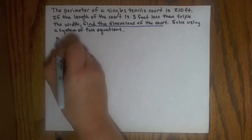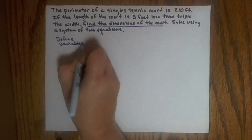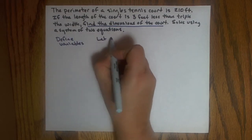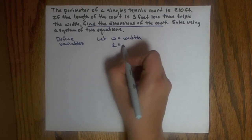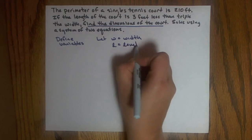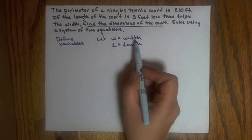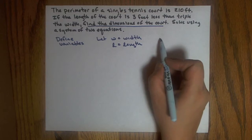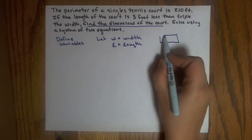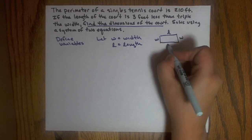So my first step is always to define my variables. And in this case, I think I will choose to let W equal width and L equal length. And that's my choice. I can always use X and Y or other variables, but since it's a rectangle, a tennis court is a rectangular shape, I'm going to go ahead and use width and length. So if I'm thinking of a tennis court, you'll have width and length.